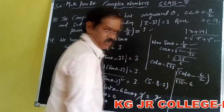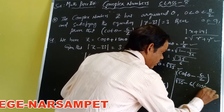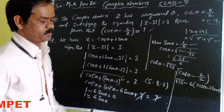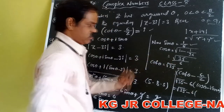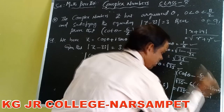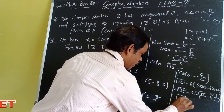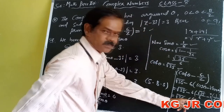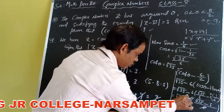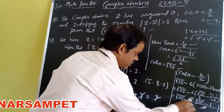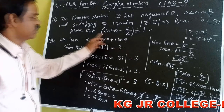Now computing cotθ − 6/Z: cotθ = cosθ/sinθ = √35, and 1/Z = cosθ − i sinθ (the reciprocal of cosθ + i sinθ). So cotθ − 6/Z = √35 − 6(cosθ − i sinθ) = √35 − 6(√35/6 − i·1/6). Taking LCM 6: √35 − √35 + i = i. Hence cotθ − 6/Z = i — proved. Thank you.